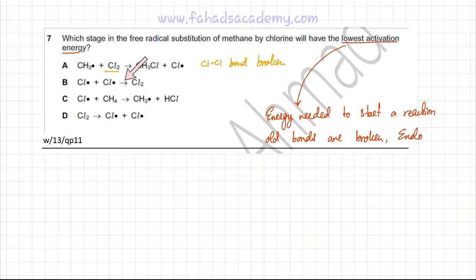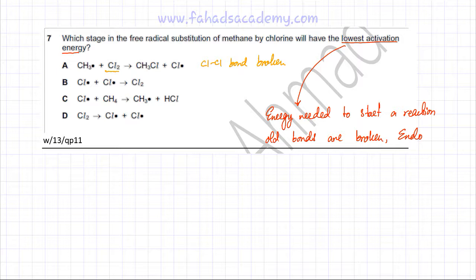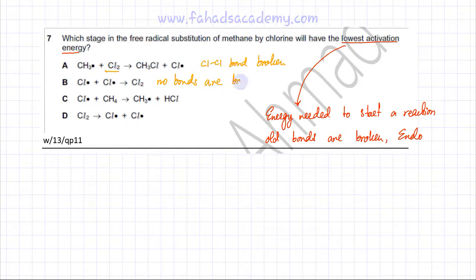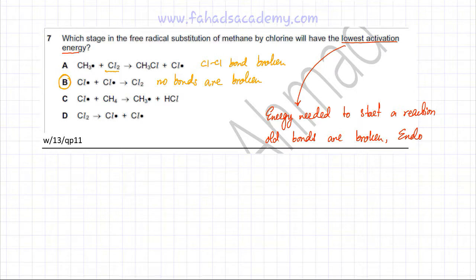But if you look at the second reaction, you would notice — looking at the reactants and the products — that no bonds are actually being broken. There's a Cl-Cl bond that's being formed. In this reaction, no bonds whatsoever are broken, which means this reaction doesn't need energy initially. It doesn't need energy to break bonds. Hence, this would be the correct option — it would have the lowest activation energy because it doesn't involve any bond breaking.